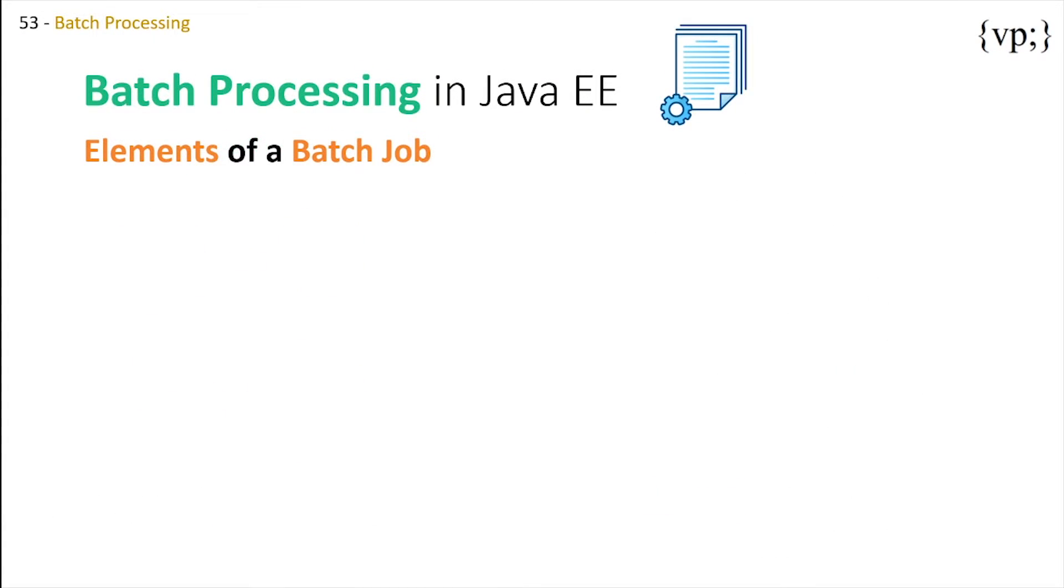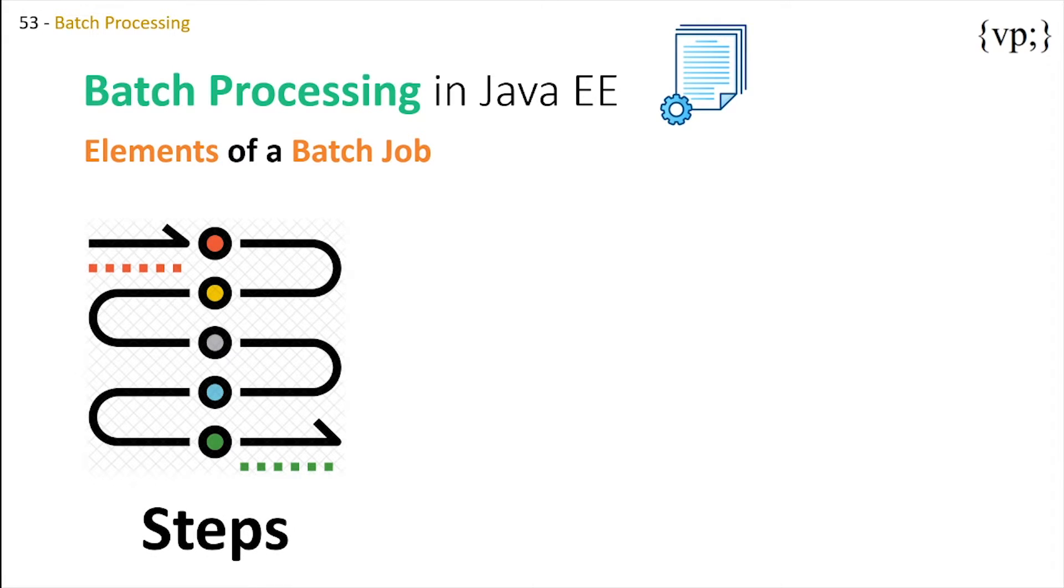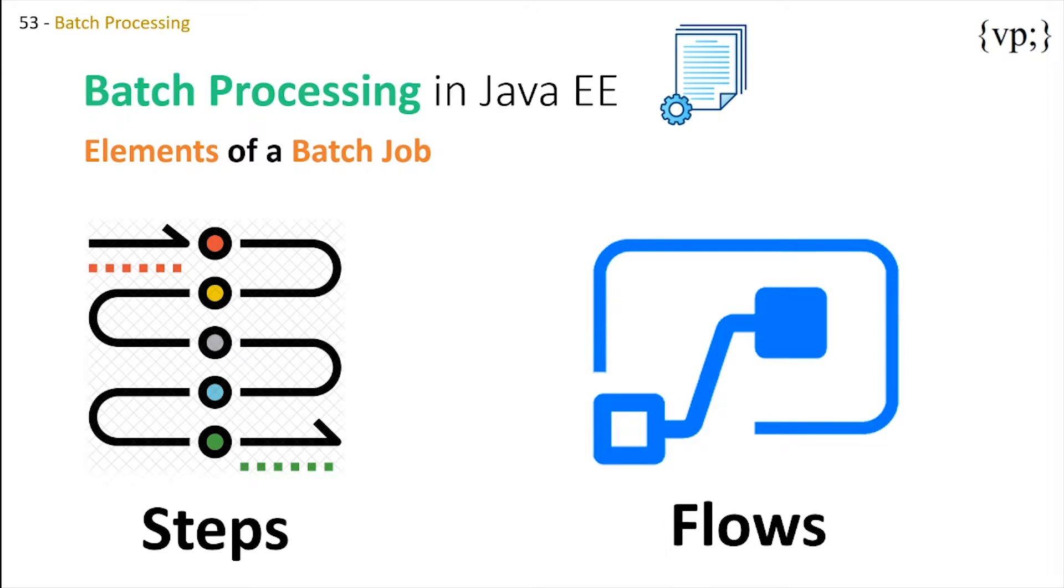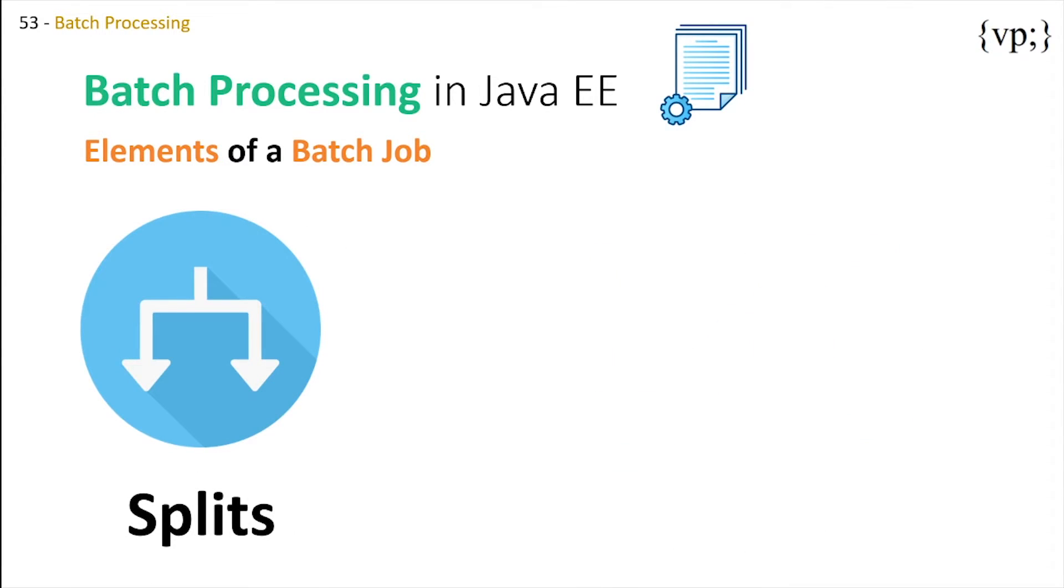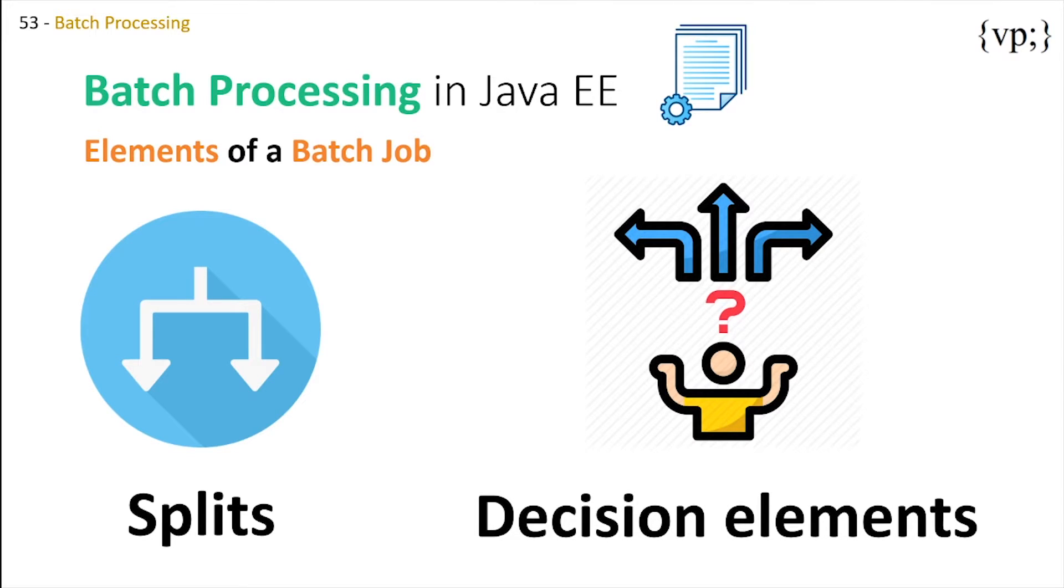So there are many things a batch job can be separated into. First, there's steps, which is basically your chunk or task which we talked about before. Flows are a group of steps that execute as one single unit. Splits are basically a set of flows that execute in parallel, while decision elements use the exit status of the previous step to determine the next step or to terminate the batch job.